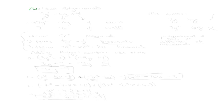We're going to learn how to add and subtract polynomials. Before we go into that, let's remember some things. Say I have an expression like 7y squared minus 6y plus 4. What are the terms of this expression? The terms are what's separated by the plus and minus signs, so the terms would be 7y squared, negative 6y, and 4.